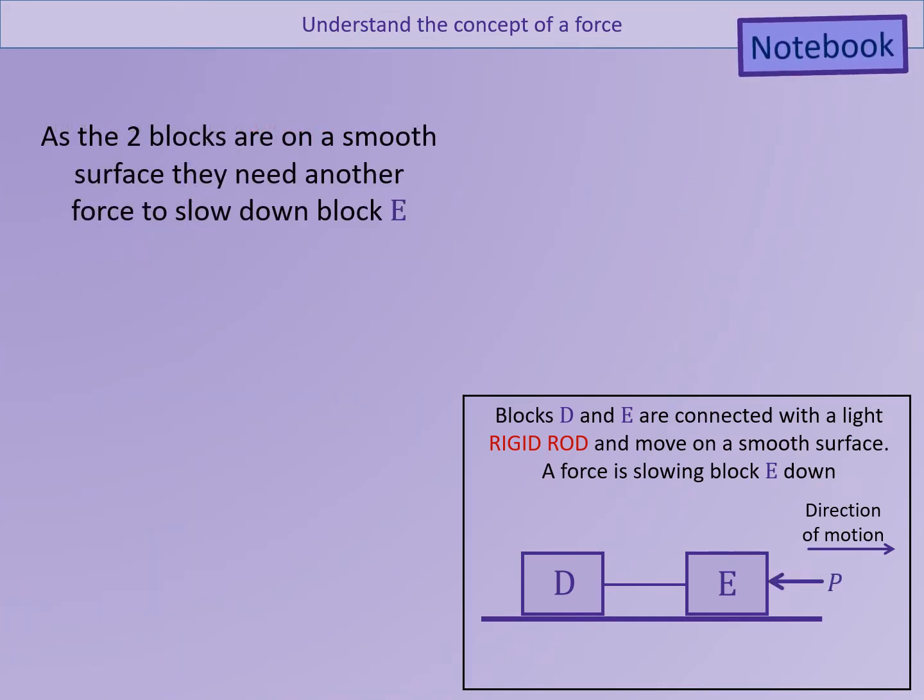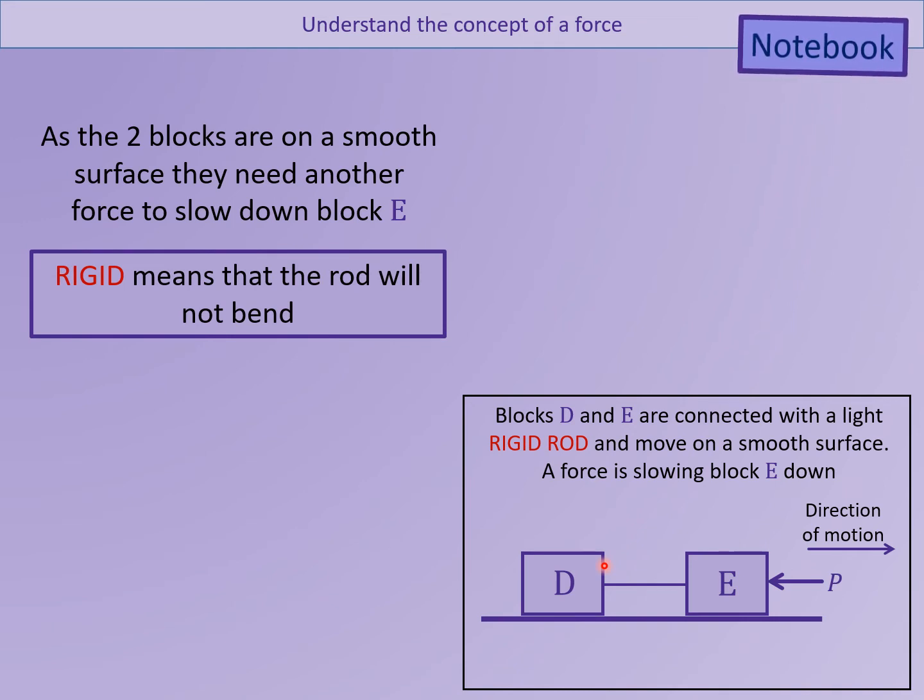We are now going to consider the fourth scenario in which there are two blocks, D and E. They are connected with a light rigid rod in the middle. They are moving along a smooth surface in the direction shown, and there is a force slowing down block E from this side. The blocks are moving on a smooth surface, so there is no friction opposing the motion. So the only force opposing the motion horizontally is the force P. This could be somebody pushing on the side of the box. Rigid tells us that the rod will not bend when force is applied to it.